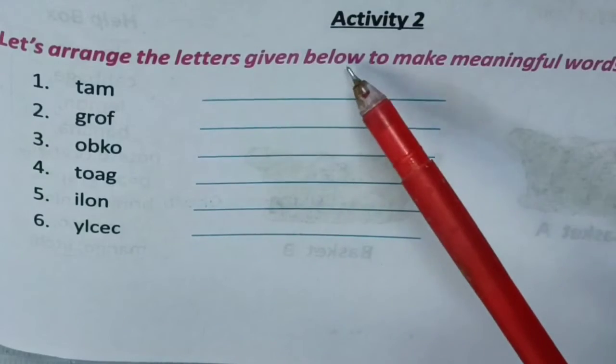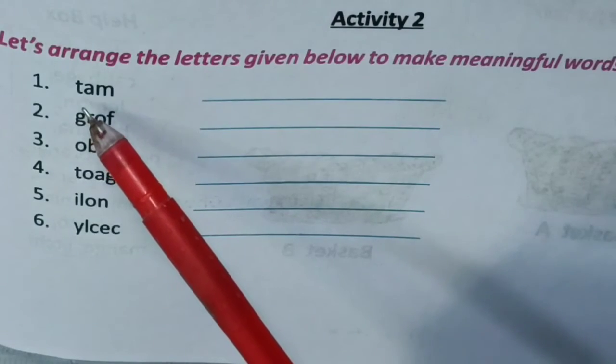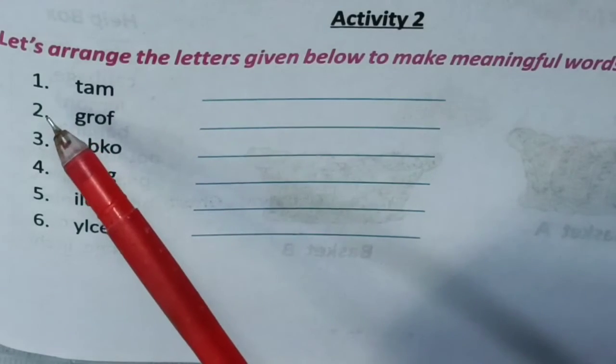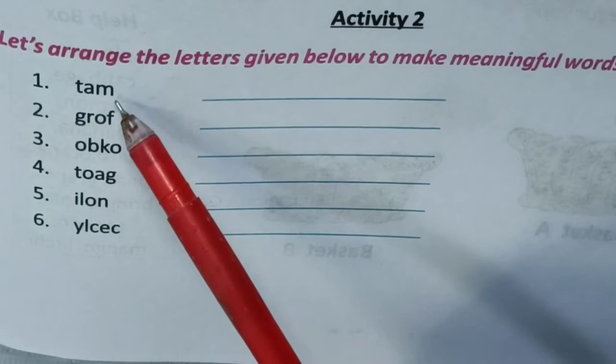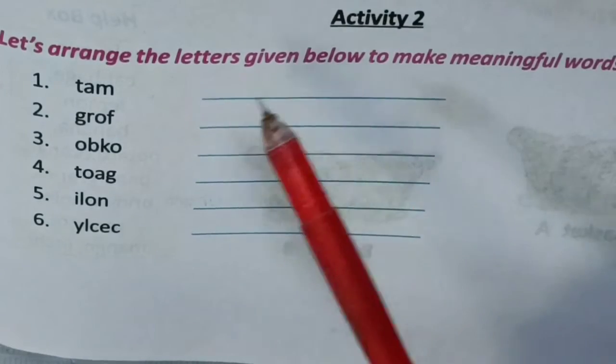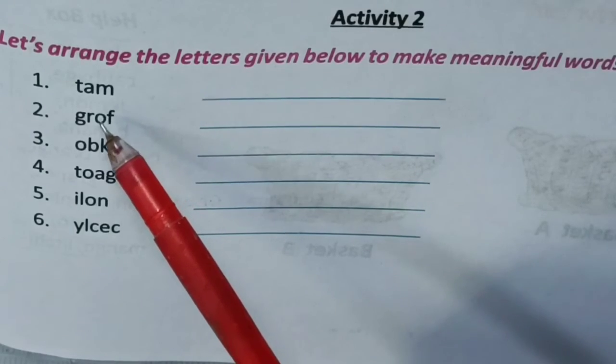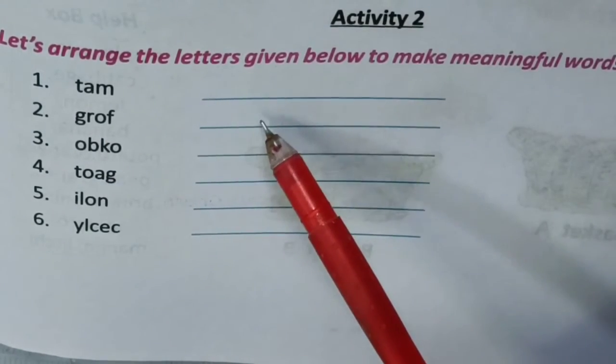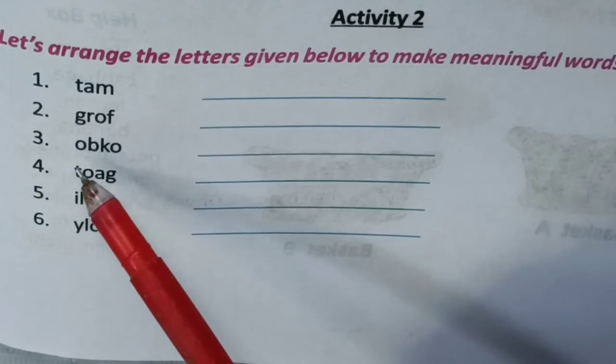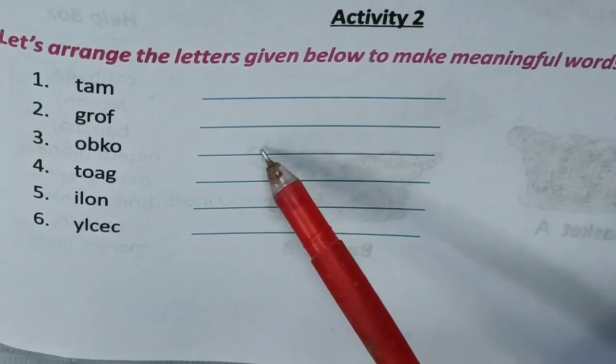Let's arrange the letters given below to make meaningful words. અર્થાત એખાને કિછો અક્ષર બોશારનો આચે ઉલ્ટો પાલ્ટા સેકલો શાજીએ આમાદેર એખને લીખતે. Frog, frog means બેણ